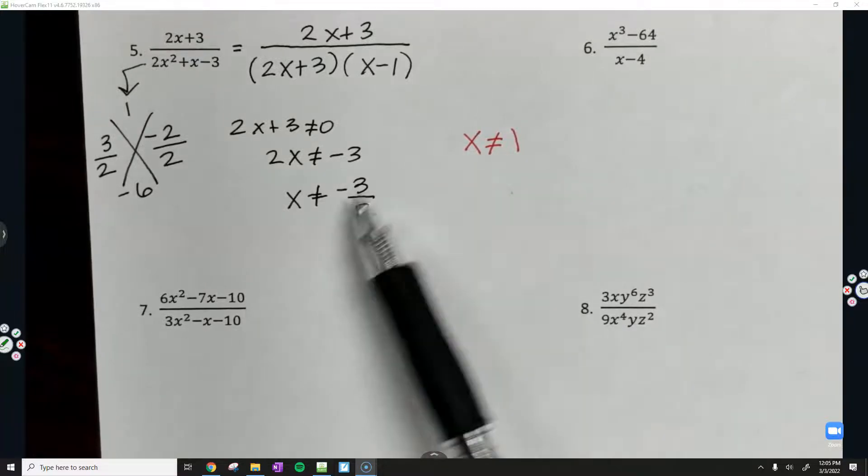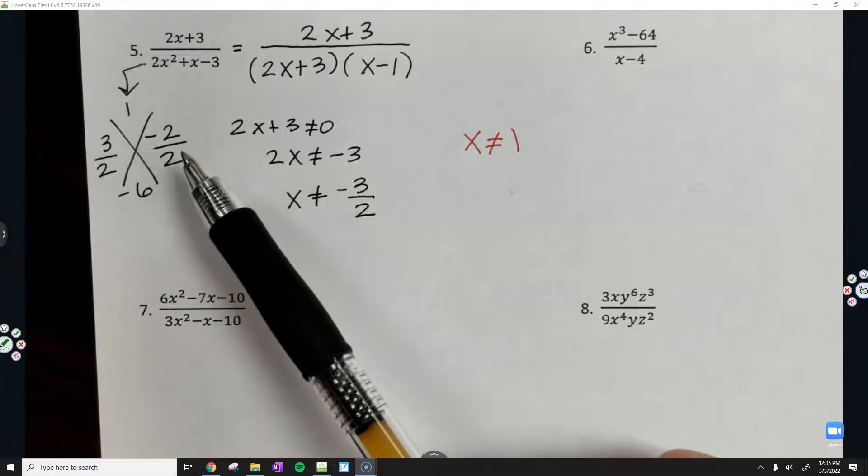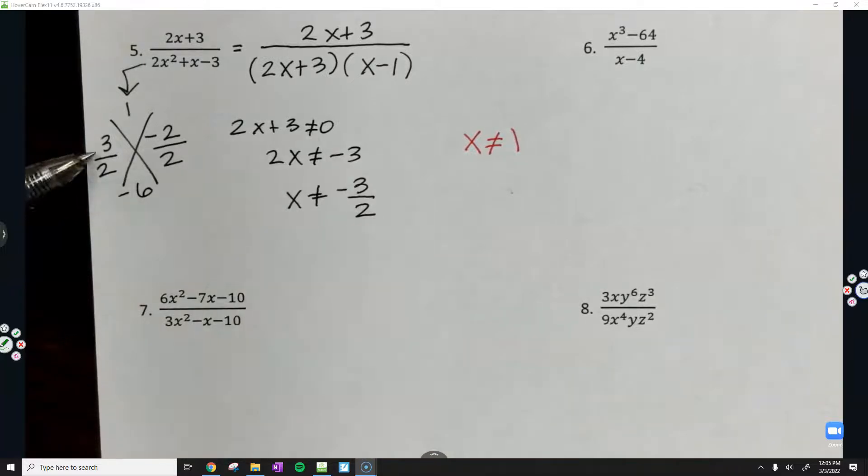These two are my restrictions. If you guys do slide and divide and you choose to do that for your factoring, your restrictions are always going to be opposite on what is the side parts of your organizer here.